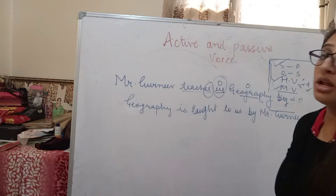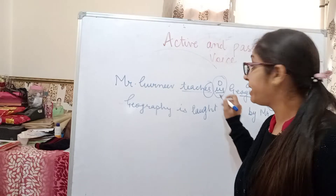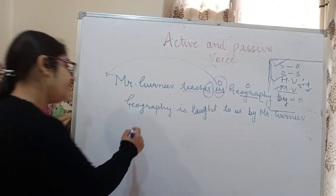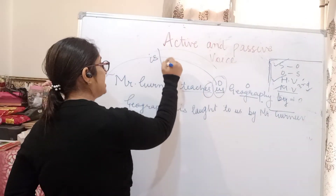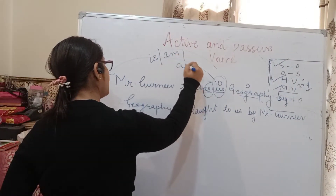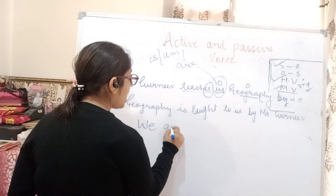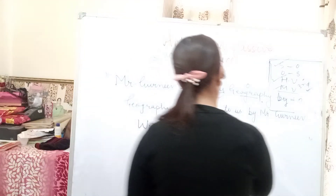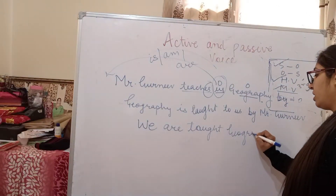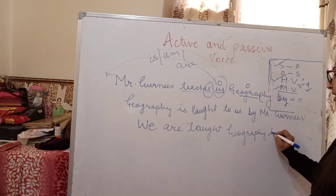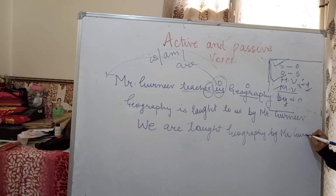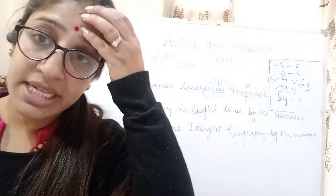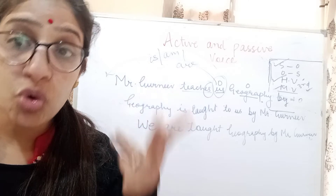Now if you take 'us' as the subject — when 'us' moves to subject position it becomes 'we.' With 'we' in simple present you use 'are.' So: 'We are taught geography by Mr. Gurneet.' These are the ways to change a sentence with two objects from active to passive.